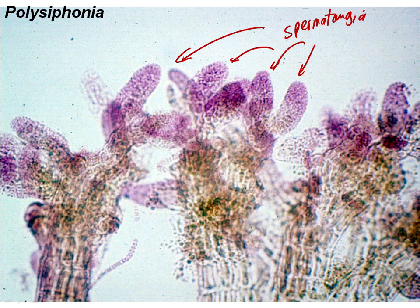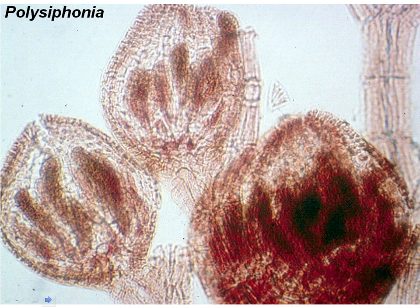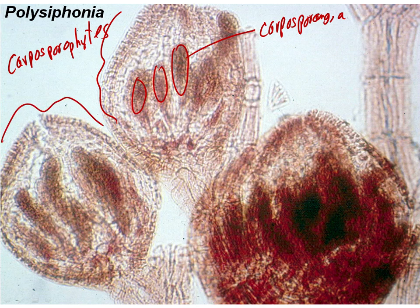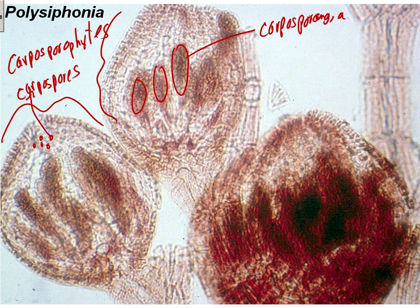You should be able to see the spermatangia in prepared slides in lab. Here are the carposporophytes of Polysiphonia — you'll be able to see these in lab. Inside the carposporophytes are the carposporangia, which will open and release the carpospores — non-flagellated spores. Carpospores are released and go on to form the tetrasporophyte.